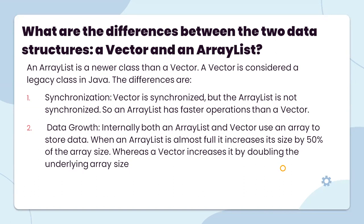What are the differences between Vector and ArrayList? ArrayList is the newer class than Vector. Vector is considered a legacy class in Java. Vector is synchronized, but ArrayList is not synchronized, so ArrayList has faster operations than Vector. Internally, both ArrayList and Vector use an array to store data. When an ArrayList is almost full, it increases its size by 50% of the array size, whereas Vector increases by doubling the underlying array size.